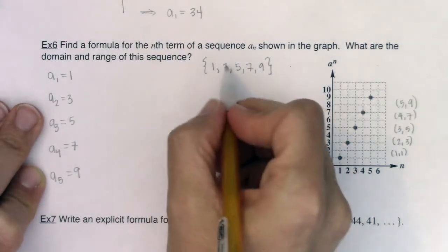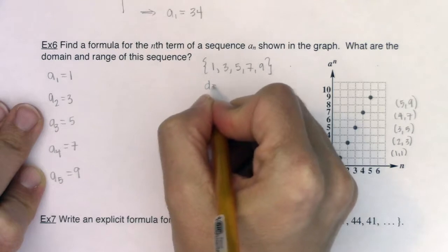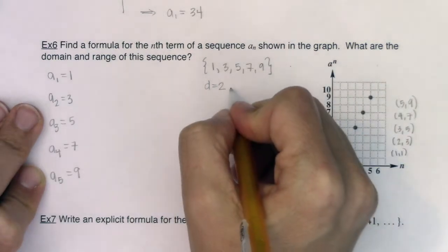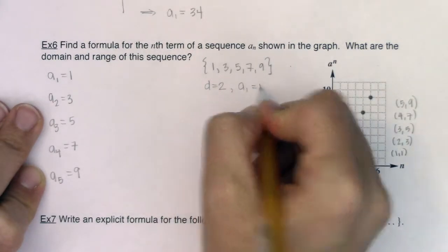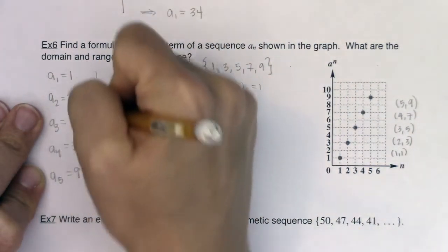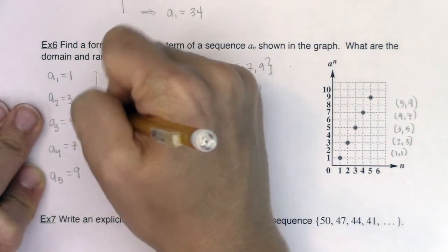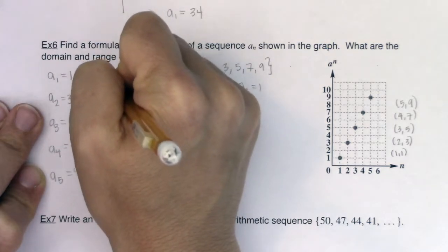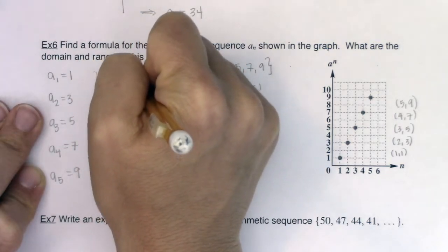When I look at this, I can notice that d is 2. And then it's always good to point out your first term. Another thing I'm taking note of is that this is an arithmetic sequence.